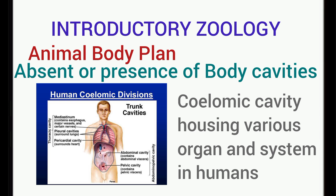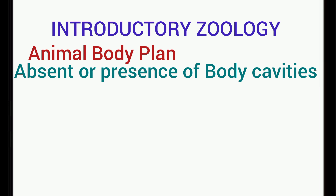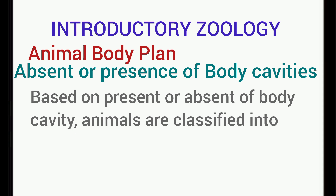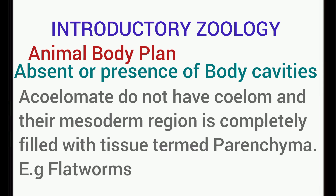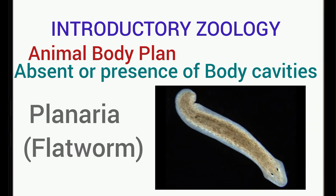Based on the presence or absence of body cavity, animals can be classified into the following: acoelomate, pseudocoelomate, and coelomate or eucoelomate. In the acoelomate, these animals do not have a body cavity or coelom, and their mesoderm region is completely filled with tissue termed parenchyma. Examples of acoelomates are flatworms and other primitive animals.